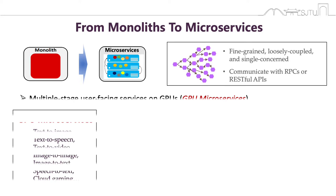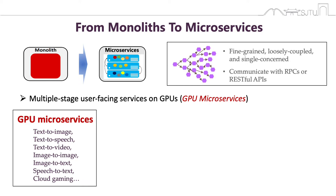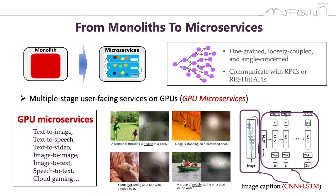Many in-production services on GPUs are implemented with big models including multiple neural networks or machine learning modules. We call these multi-stage user-facing services on GPUs, GPU microservices. Many common AI-related services, for example text-to-text, text-to-image, text-to-speech, text-to-video, image-to-image, image-to-text, and speech-to-text, are all implemented by connecting multiple AI modules. For instance, image captioning, which belongs to image-to-text, has two modules: an encoder using a deep convolutional neural network, and a decoder based on a stack of LSTM layers.